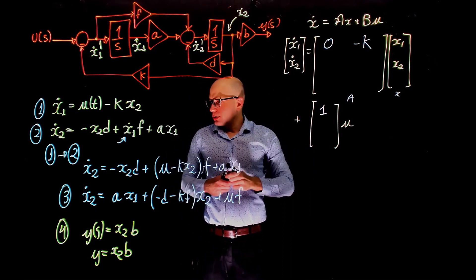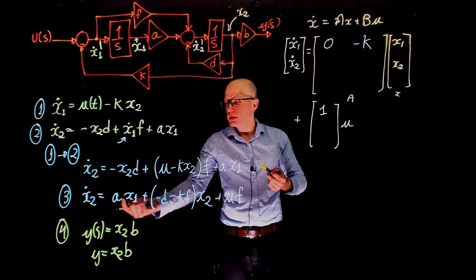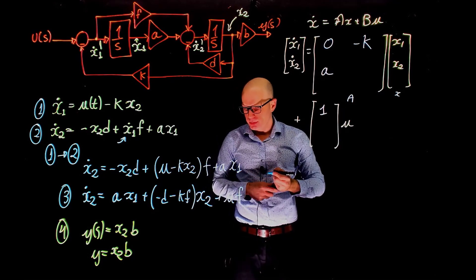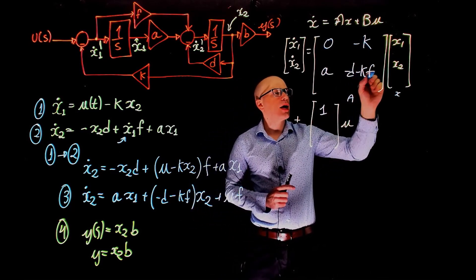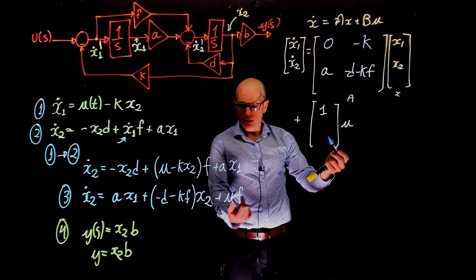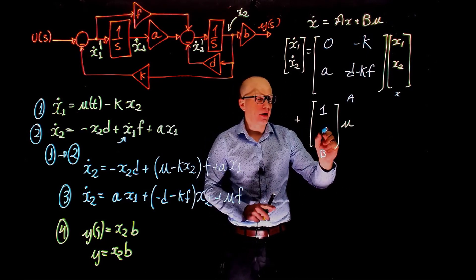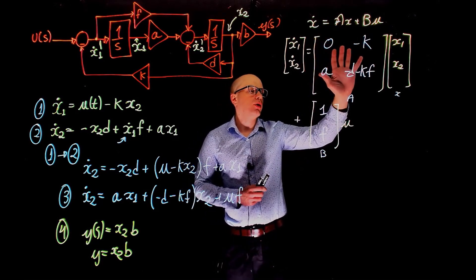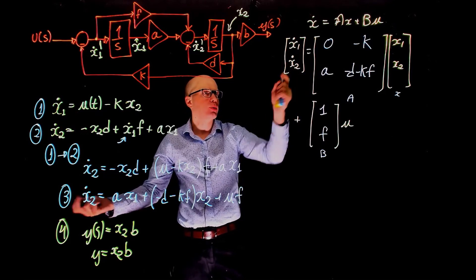Now let's look at x2 dot. For x2 dot, we're going to look at equation 3. What do we have there? We see that x2 dot depends on x1, the coefficient here is a. So what goes in this matrix here is simply a. And we have, for x2, negative d minus kf. And we have u times f. So the input is multiplied by f, which means that in the matrix B here, we have f in the second cell. This is this expression. Now, here are all the coefficients for A. If you multiply these matrices out, we'll go back to equation 1 for x1 and to equation 3 for x2.